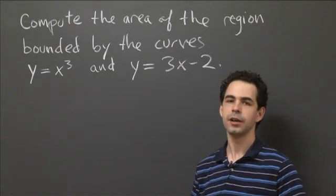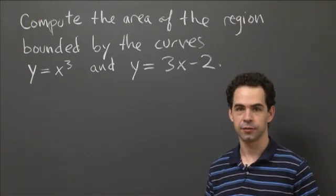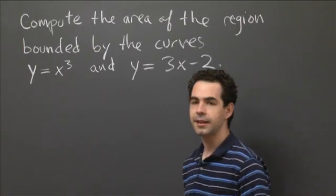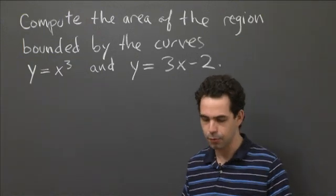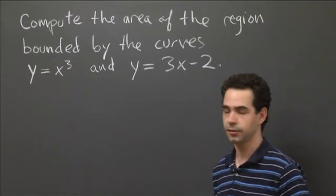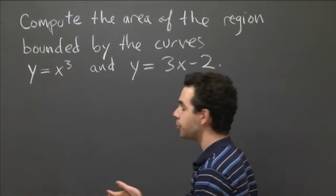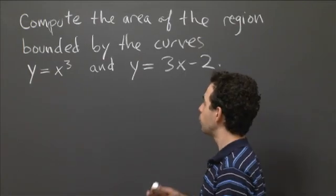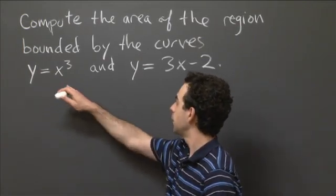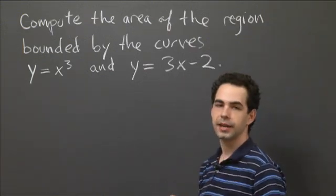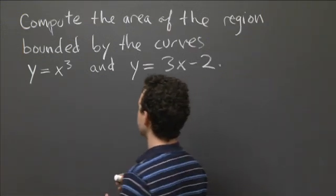So in order to figure that out, we should figure out where these curves intersect. So in other words, we need to find the endpoints of the interval over which we're going to integrate. So in order to do that, we have to solve for where we have the intersection between y equals x cubed and y equals 3x minus 2. So we have to solve the equation.